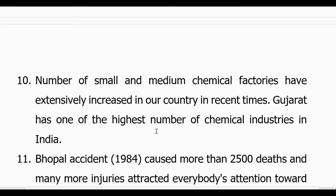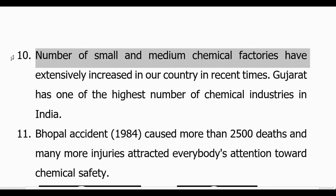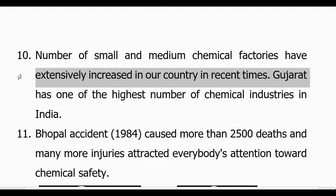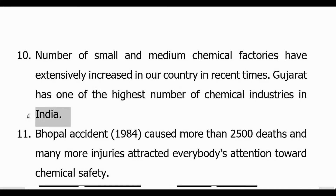These are the nine important points. Now I come to the last two important points which indicate the need of safety in chemical industries. There are a large number of small and medium chemical factories, and this number is continuously growing in our country. Particularly when we talk about Gujarat, our state — it is having one of the highest numbers of chemical industries in the entire nation. Friends, more the industries, more the employees, more the chances of accident, and more is the need of safety.